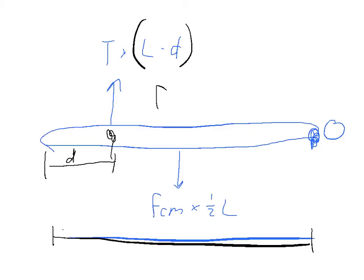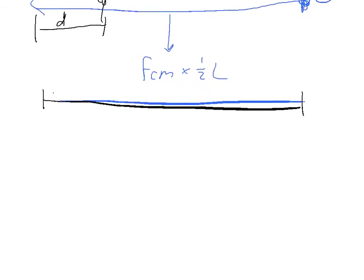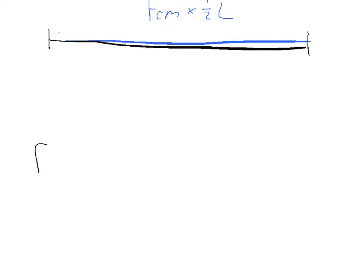We could sum up the torques and we would say that the force of center mass times one half of L plus the force of tension times the L minus D equals zero. Now I can use my equation for the sum of the torques and I can solve for the force of the tension. The force of center mass times one half L plus the force of the tension times L minus D equals zero. I can subtract my force of center mass times one half L over to the other side of the equation. The force of the tension times L minus D is equal to negative force of center mass one half L.